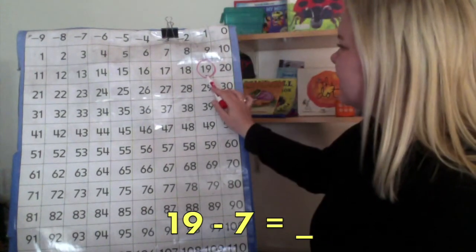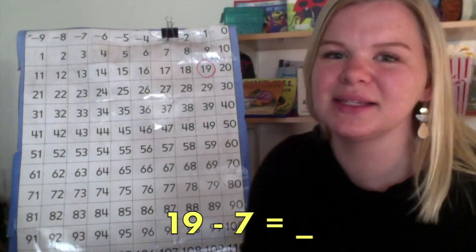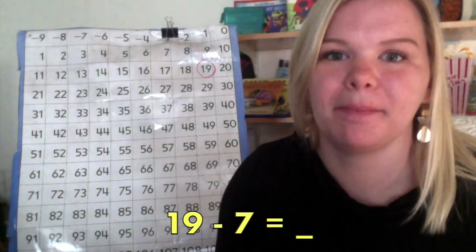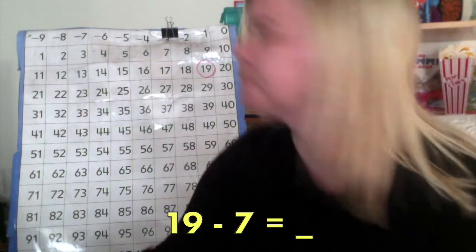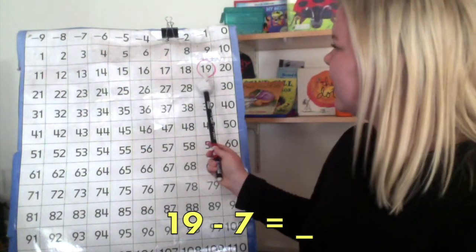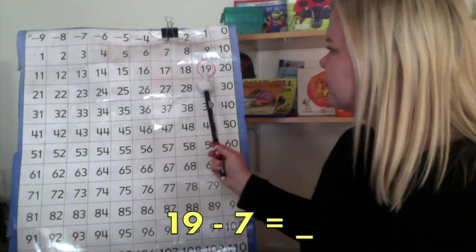We start at 19. And, because our problem says minus, we need to count backward this time. So, we start at 19 and we count backward 7.